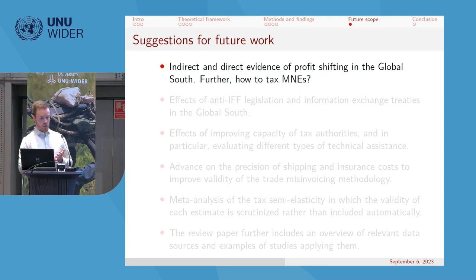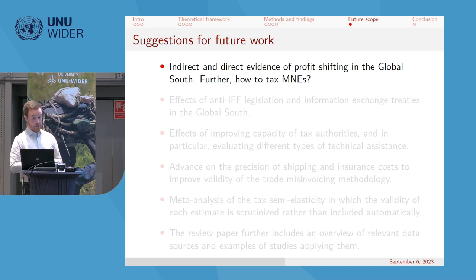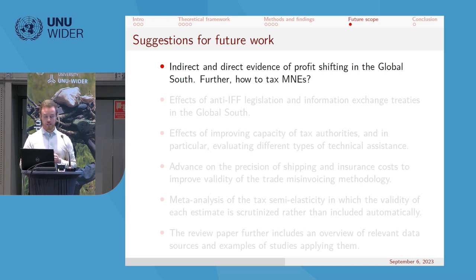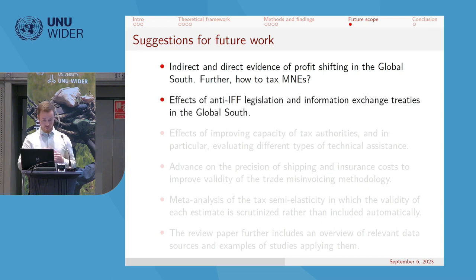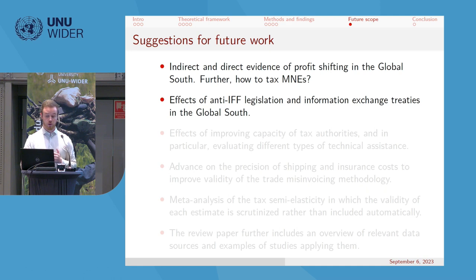Suggestions for future work include more direct and indirect evidence of profit shifting in the global south, where current evidence is mostly from high-income countries. We should also examine how to most efficiently tax multinational enterprises, and study anti-IFF legislation and information exchange treaties in developing countries, where very few such studies currently exist.